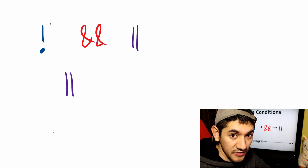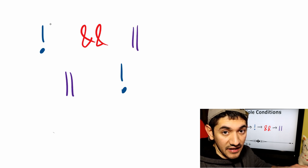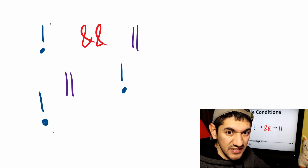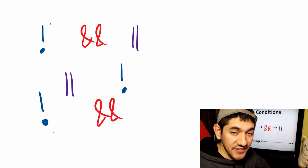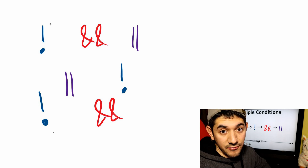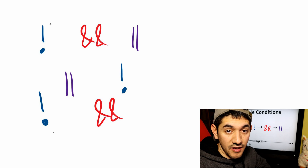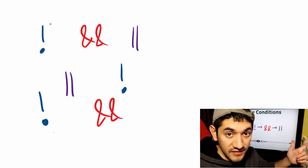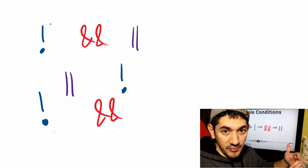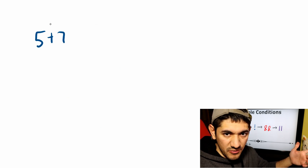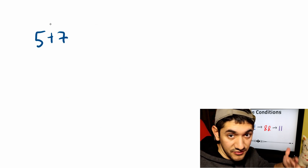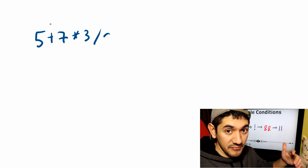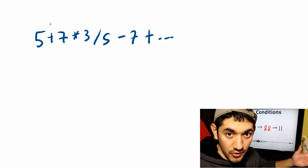For example, let's say I want to say something like this AND that OR that, but NOT that. See how I use AND, OR, and NOT all in the same statement? We've done something similar in the past with arithmetic operators — we were able to chain multiple arithmetic operations in one single expression, like five plus seven times three divided by five minus seven plus three, you can keep on going.